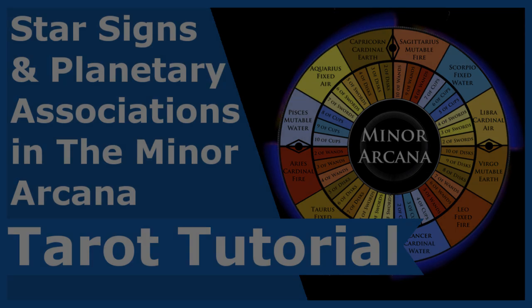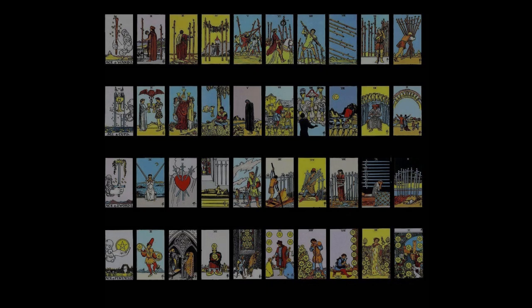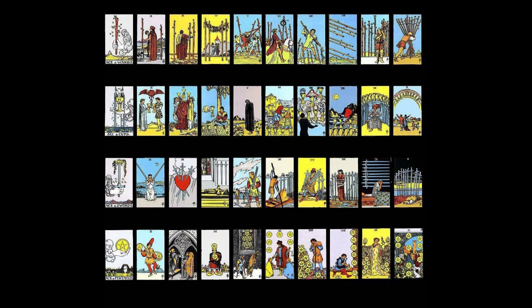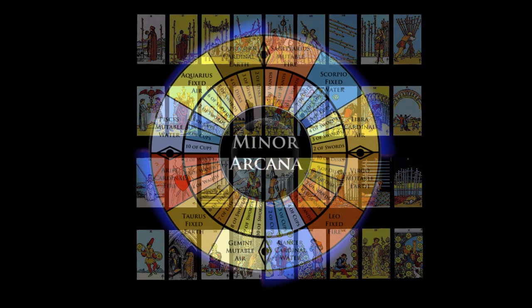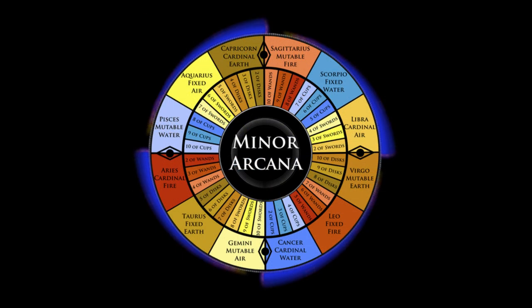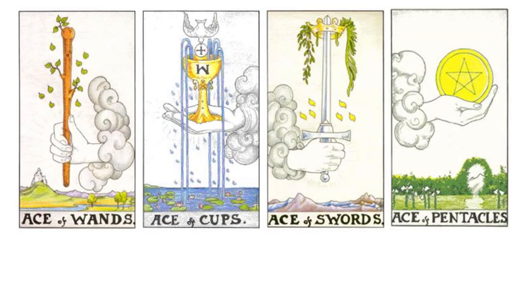The minor arcana, excluding the aces and the court cards, is made up of 36 cards that can be subdivided over the 12 zodiac signs, the 7 traditional planets of astrology, and the 4 elements.